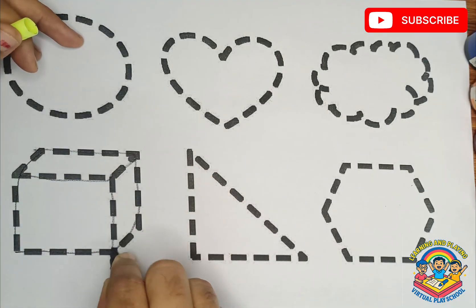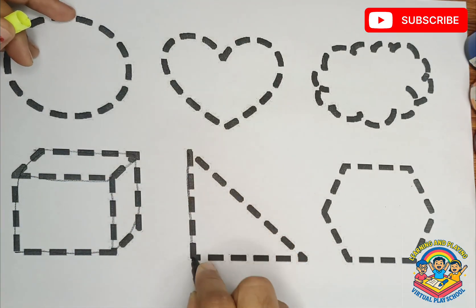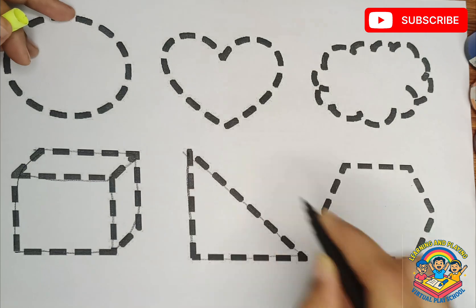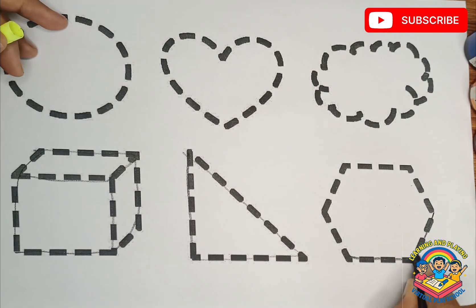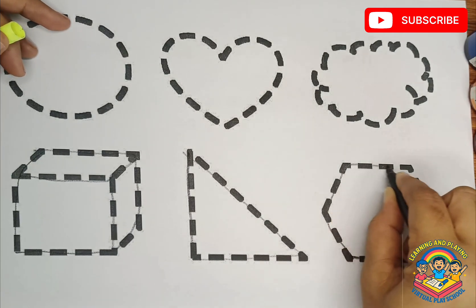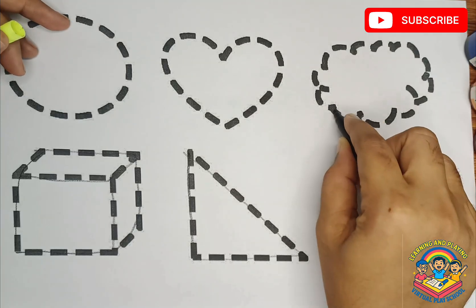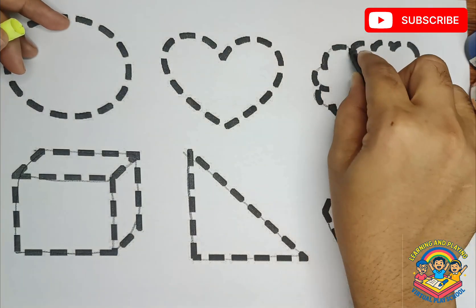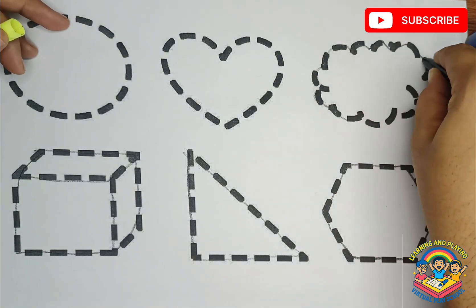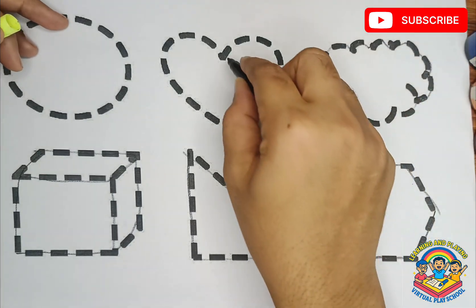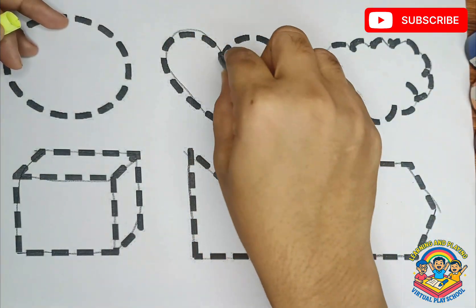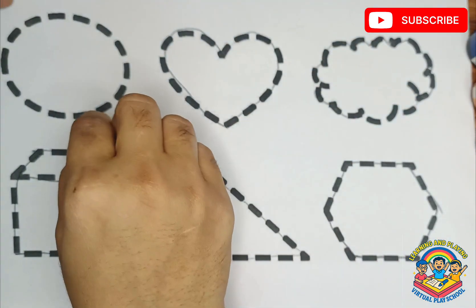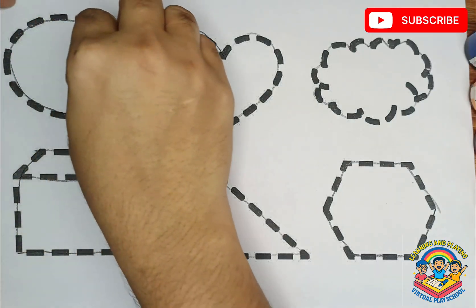This is cute shape. This is triangle shape. This is hexagon. This is blob. This is heart shape. This is circle.